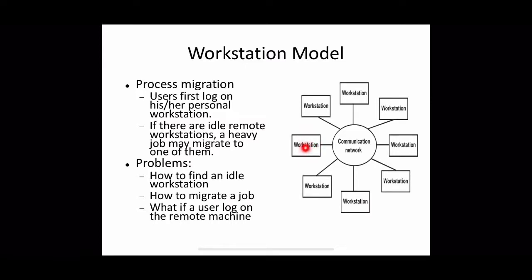Some jobs from one workstation can be moved to another workstation and executed there. In this model, a user logs onto one workstation — called his home workstation — and submits all jobs there. When the system finds that the user's workstation does not have sufficient processing power, it transfers one or more processes to a remote workstation which is currently idle, and the process is executed there. Finally, the result is sent back to the user's workstation.